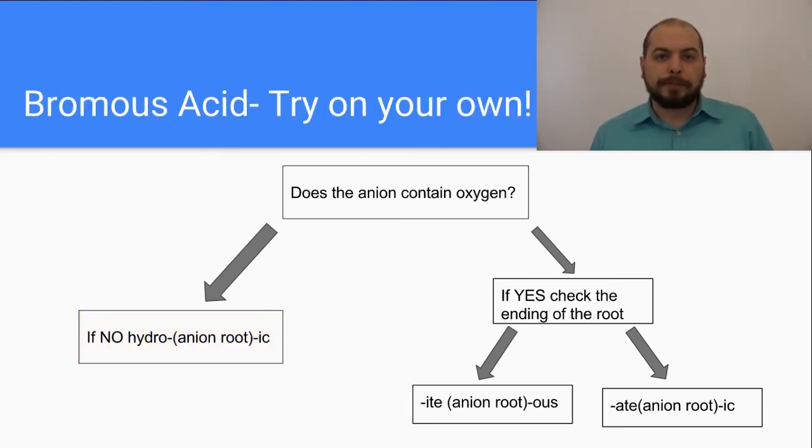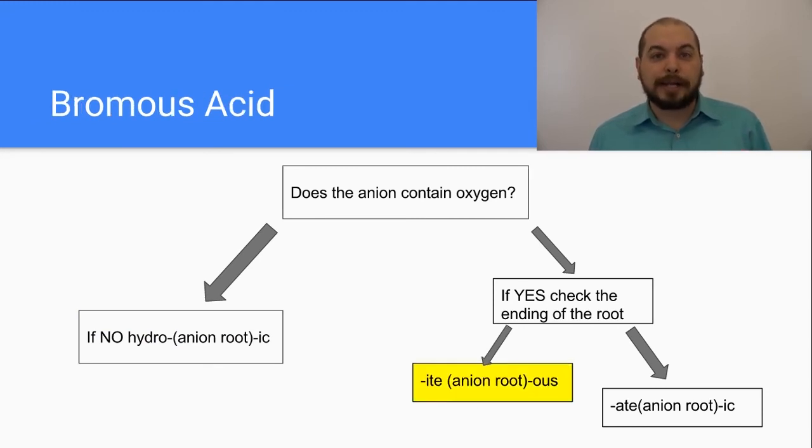Let's do another example. In this example, we are going to look at the writing of the formula for bromus acid. Now because bromus acid ends in -ous, we know that it is based off of the polyatomic ion that ends in -ite. This means it must be based off of the polyatomic ion bromite. Bromite is BrO2 with a charge of -1. Because of this, we know we need 1 hydrogen, which means that the formula for bromus acid is HBrO2.